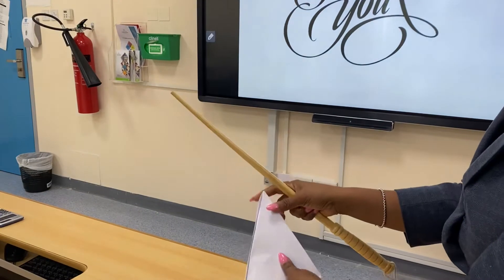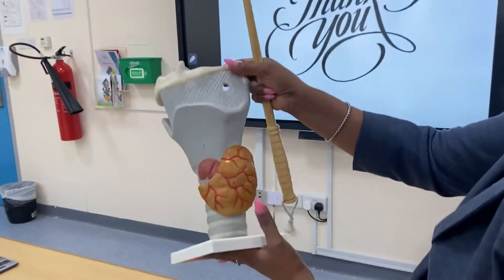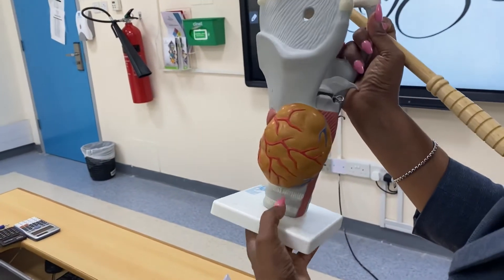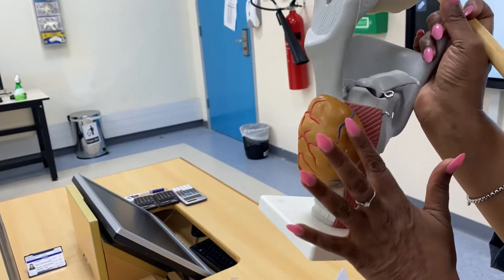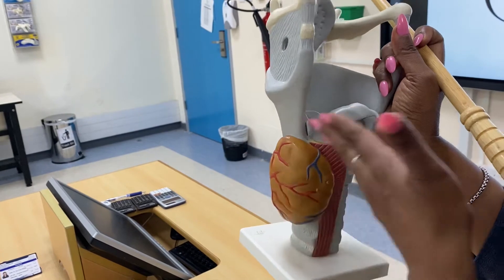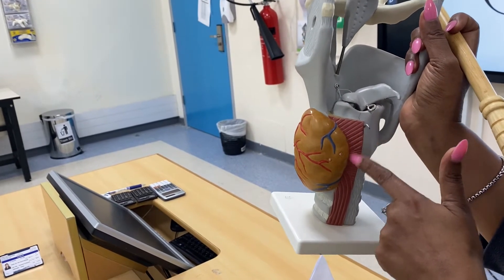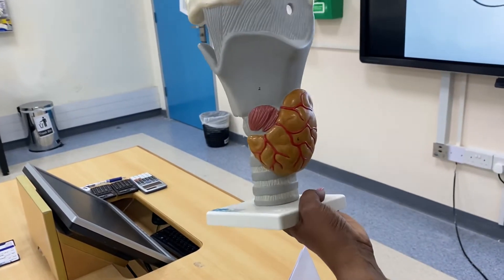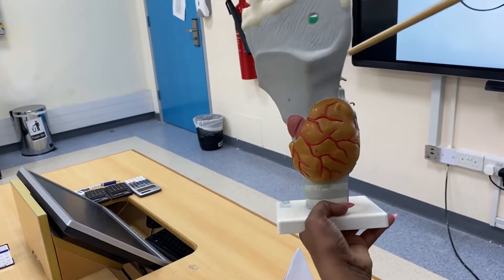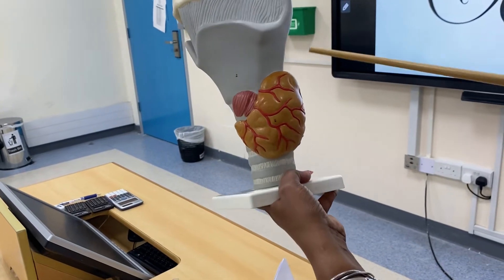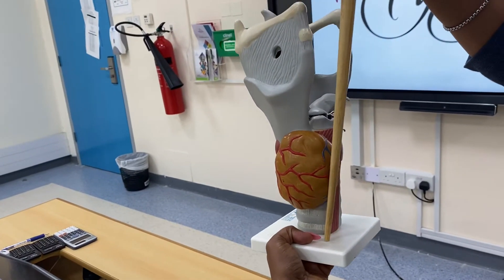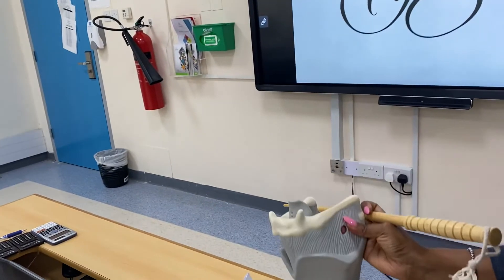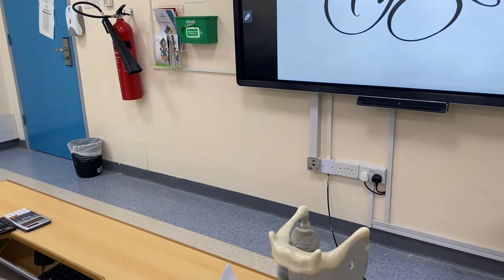Now let us move on to these structures here. This is the thyroid gland. This would be the anterolateral surface, this is the posterolateral surface, and medial is what is related deep. Can you see the inferior constrictor muscle of the pharynx here? And here you can see the cricothyroid, and the inferior constrictor muscle of the pharynx here. The posterior relations, of course, are the carotid sheath and its contents.